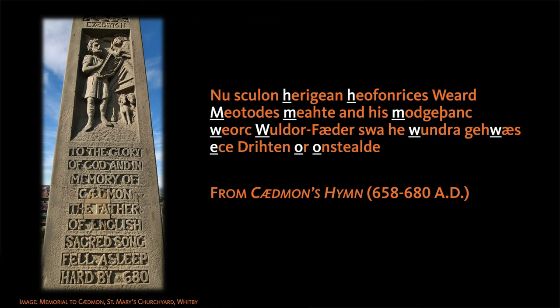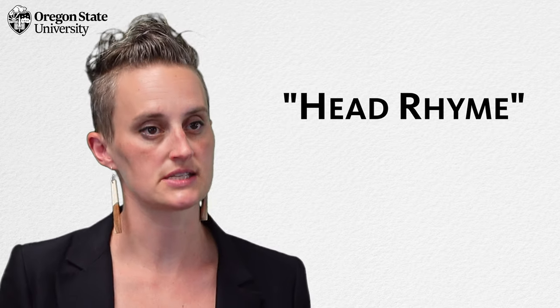Around a thousand years ago, the English language, and specifically English poetry, looked something like this. You don't need to know Old English to hear that these lines of poetry don't use end rhymes like many more traditional English poetic forms do today. That's because English poetry for many hundreds of years couldn't care less about end rhyme. Instead, it used alliteration — or what in this context we call head rhyme — like you can see in the Old English example I just read.